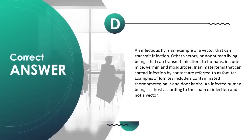Other vectors — non-human living beings that can transmit infections to humans — include mice, vermin, and mosquitoes. Inanimate items that spread infection by contact are referred to as fomites. Examples of fomites include a contaminated thermometer, balls, and doorknobs. An infected human being is a host according to the chain of infection, not a vector.